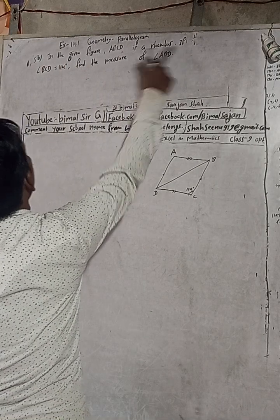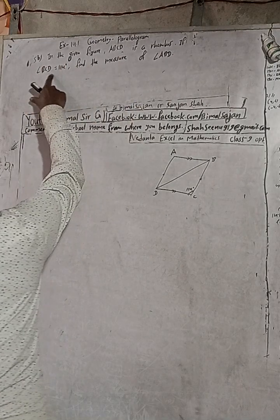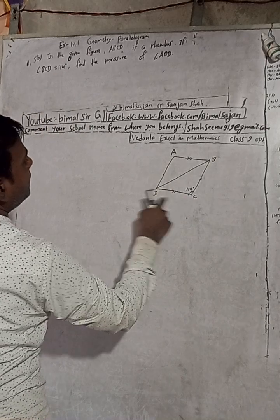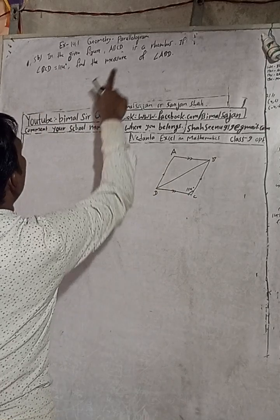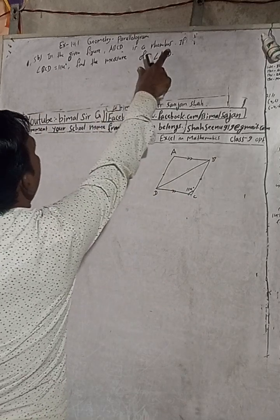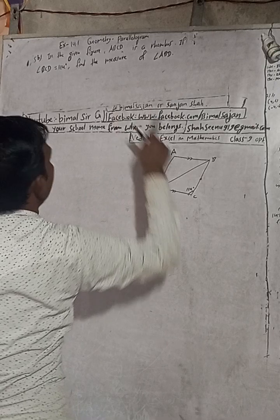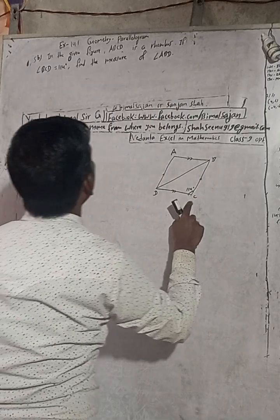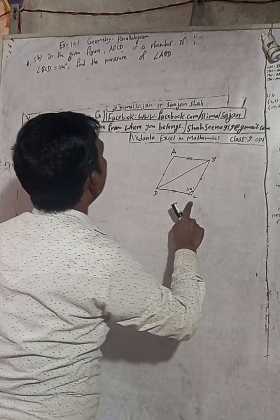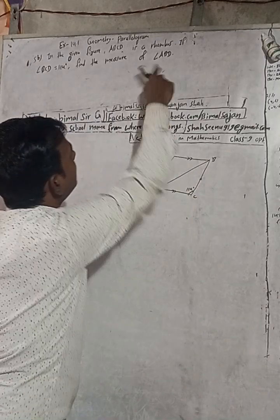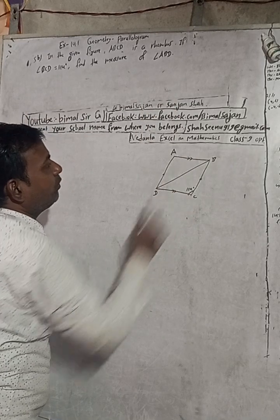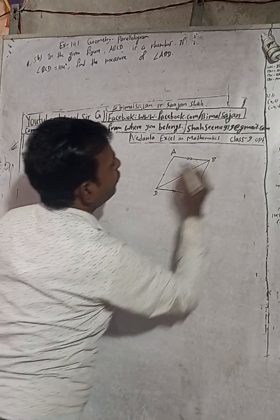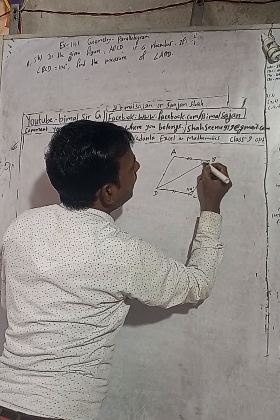Here the question is 5B: in the given figure, ABCD is a rhombus. If angle BCD is equal to 114 degrees, find the measure of angle ABD. This is the angle we have to find.